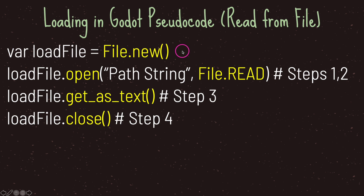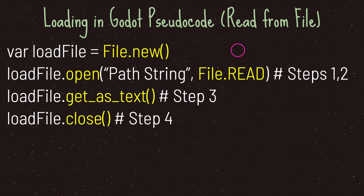Let's go ahead and see how to read from a file. Again we create a File class instance object using File.new(). From our class instance variable we use the open() method — the first argument is a string path to the file, followed by the read stream type. In one line of code we complete steps one and two. Because we're loading we just want to read, so we'll use the get_as_text() method to convert the entire file into a string value. Then lastly we close our file.